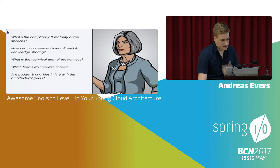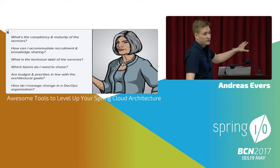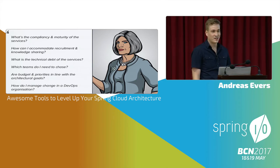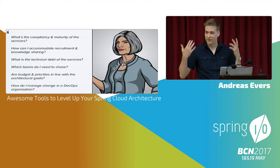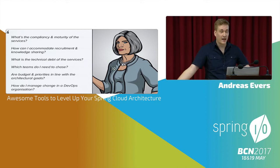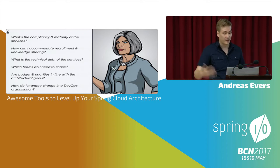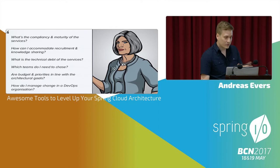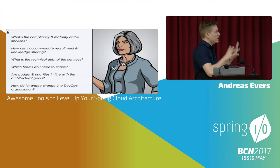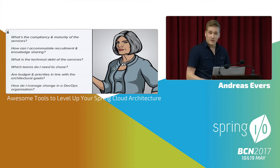There are different types of people in the organization impacted by microservices. The first is the manager. Managers want to get a sense of compliancy and maturity of the services, handle recruitment and knowledge transfer, understand technical debt, and most importantly align budget and priorities with architectural goals. In my experience, people often get this wrong — the proof of concept works fine with Spring and Spring Cloud, but when you start scaling up things aren't as mature. You have to keep investing, and making managers aware of that is key. Change management is also important since everything now goes to production continuously.